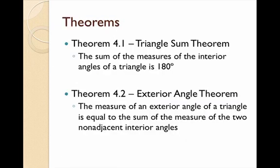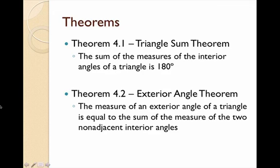Now we have a couple of theorems we'll be using throughout the year. Our first theorem is the Triangle Sum Theorem, which says that the sum of the measures of the interior angles of a triangle is 180 degrees. No matter what type of triangle — isosceles, scalene, right, acute, or obtuse — the three angles will always add up to 180 degrees. Every single triangle, the sum of the interior angles is 180.